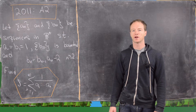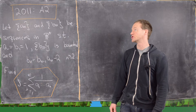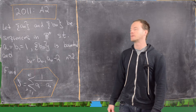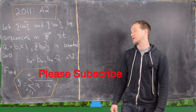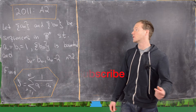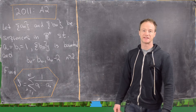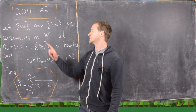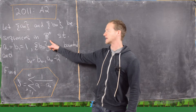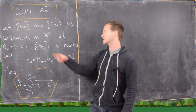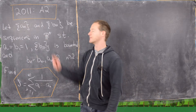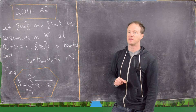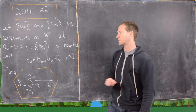In this video we're going to look at a solution to question A2 from the 2011 Putnam exam. We're first going to consider two sequences of positive real numbers, denoted AN and BN, and they satisfy the following properties.